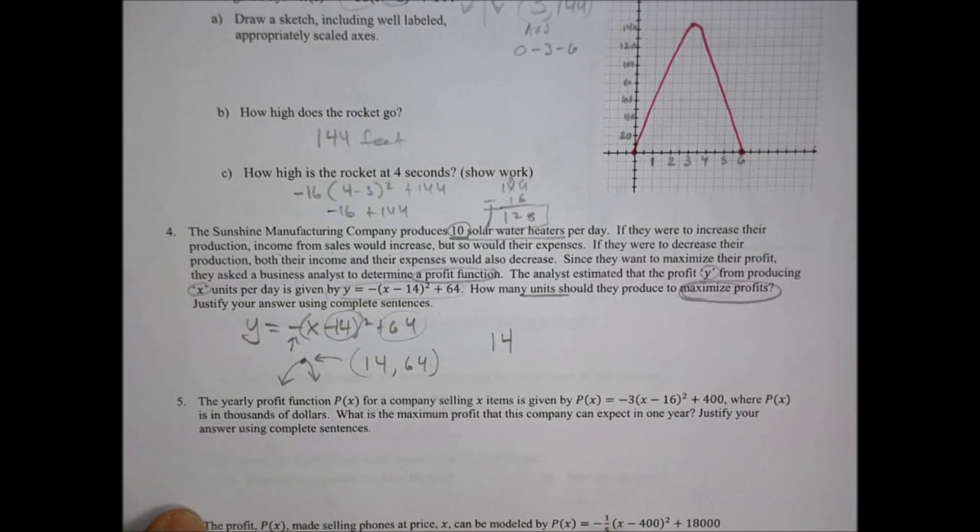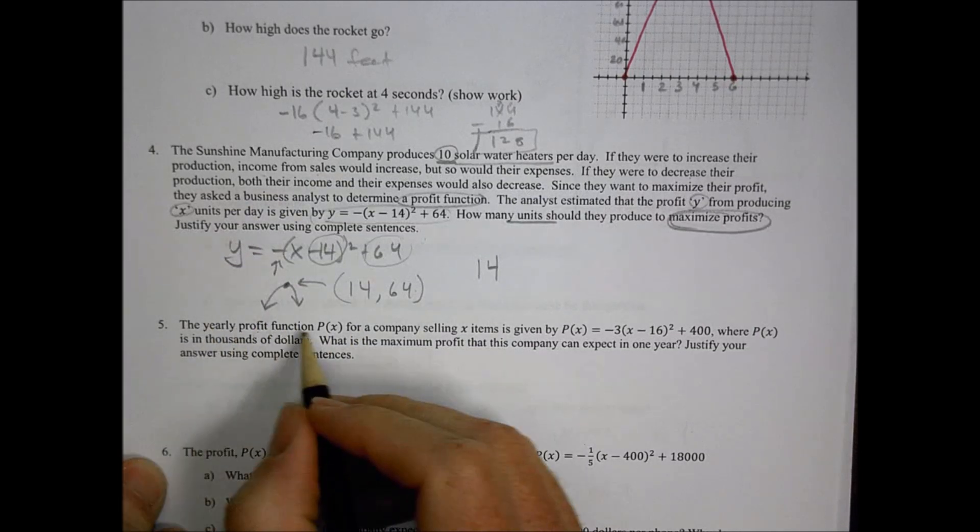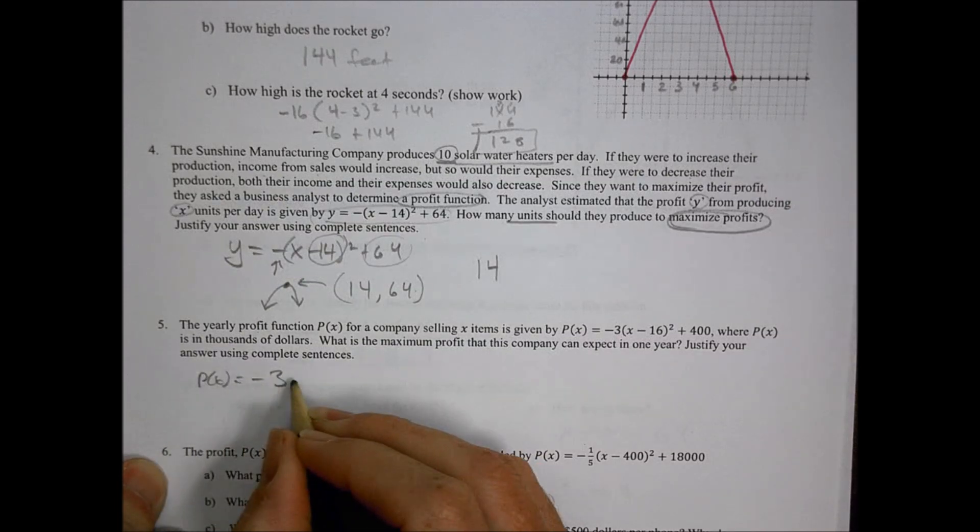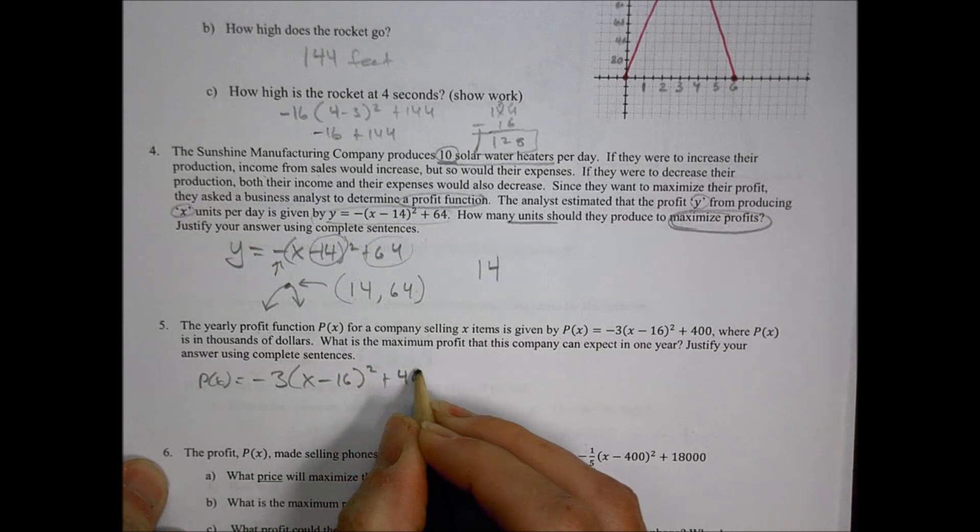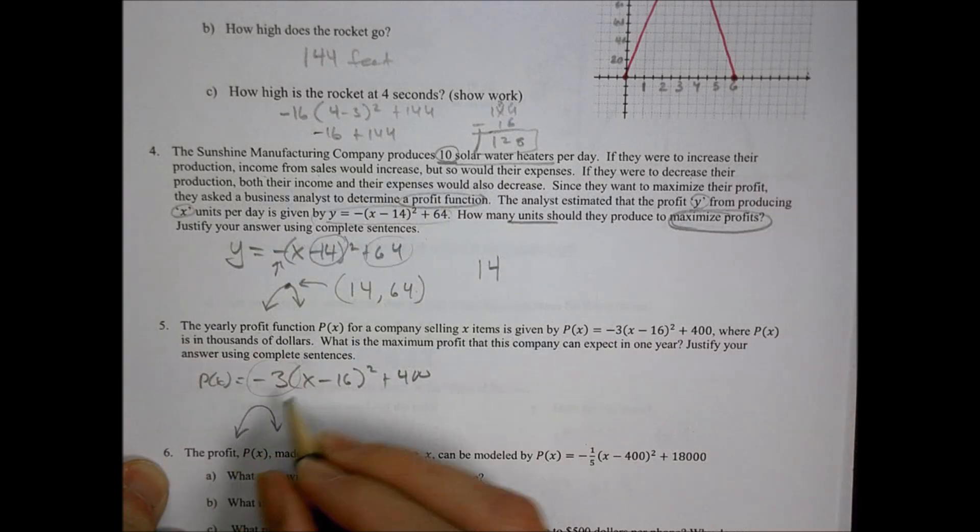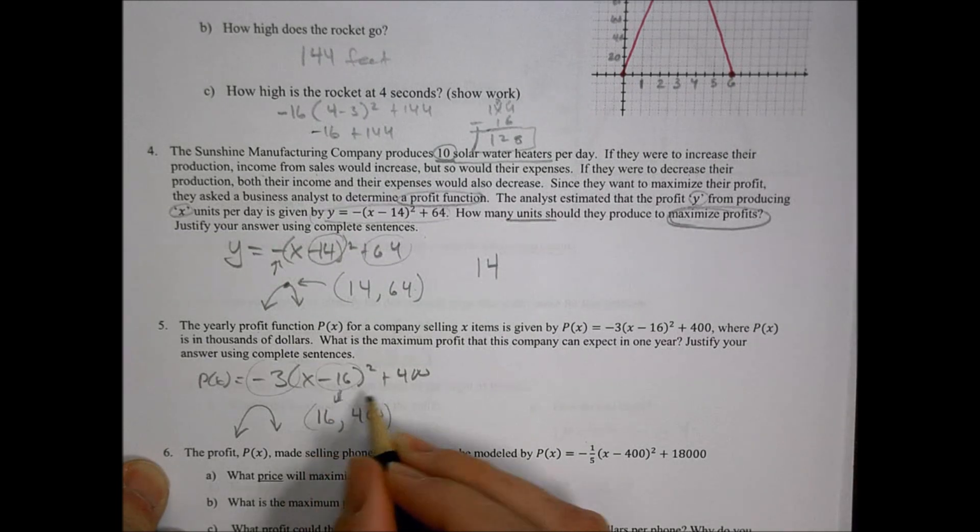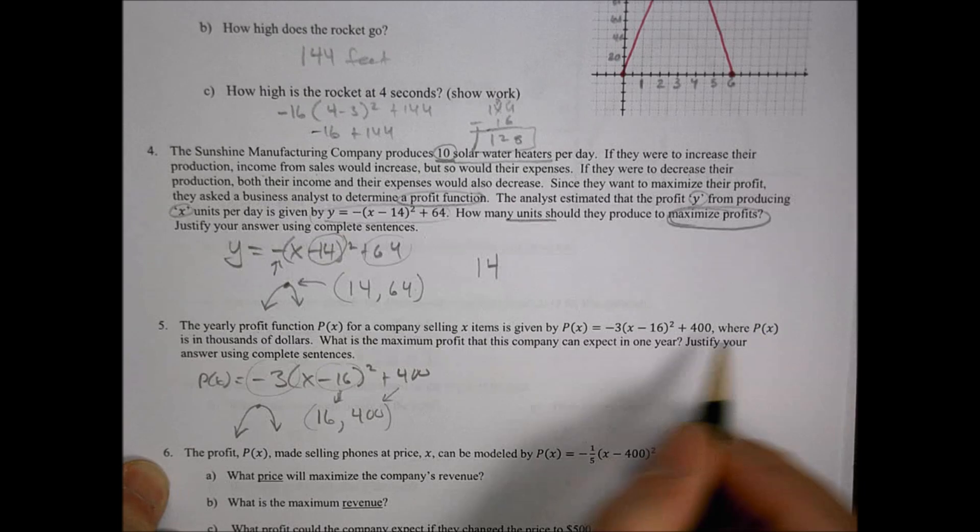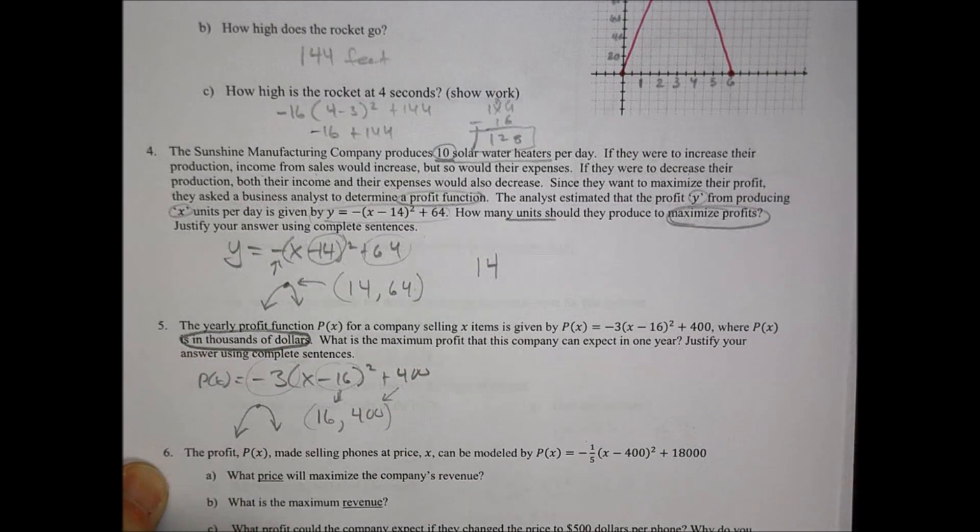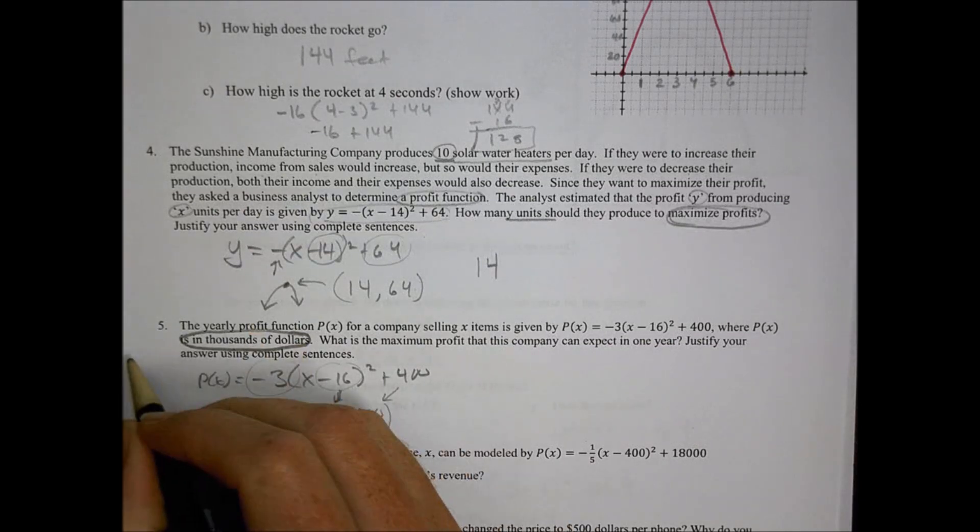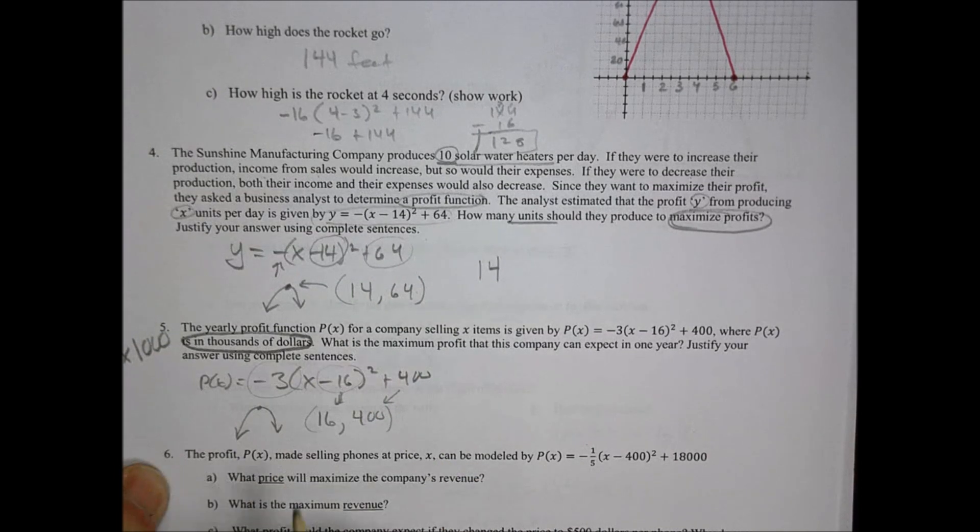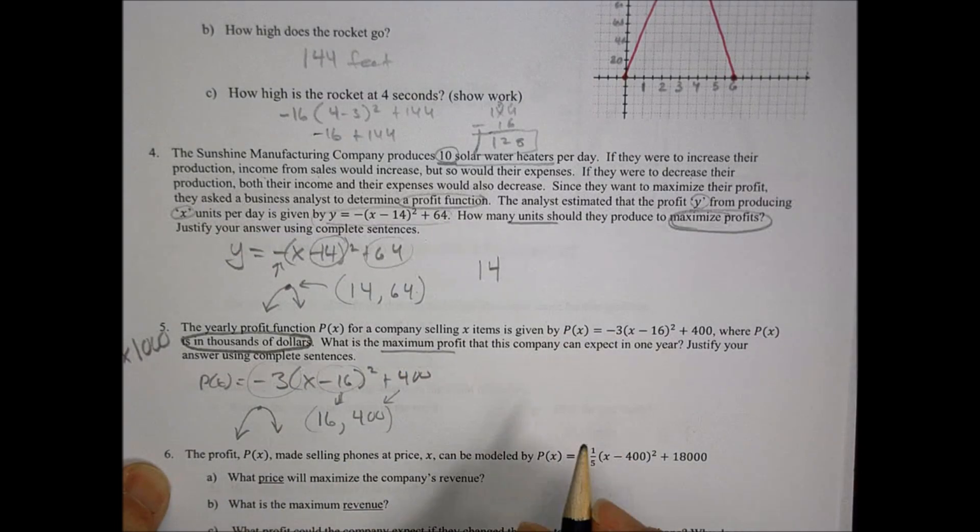Something similar happens here in number five. The yearly profit function for a company selling X items is given by this equation: P(x) equals negative 3 times (x minus 16) squared plus 400. We have a negative three there, this is going to be curving down. We can look at vertex form and say we're going to have a maximum at 16 comma 400. The 16 comes from there, the 400 comes from there. Notice this little trick: P(x) is in thousands of dollars. That's really important. So whatever answer I get, I have to multiply by $1,000.